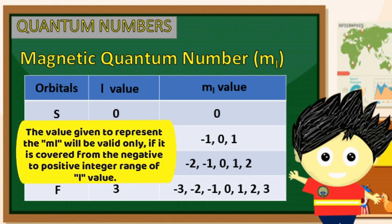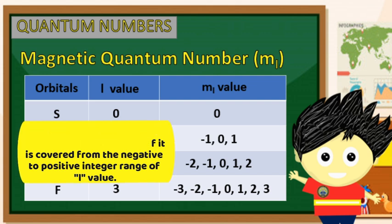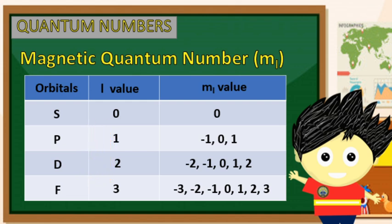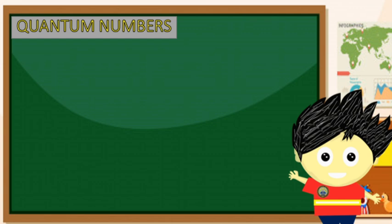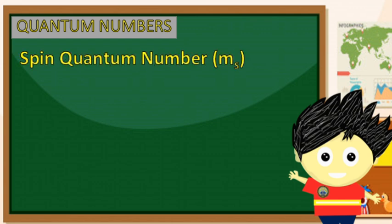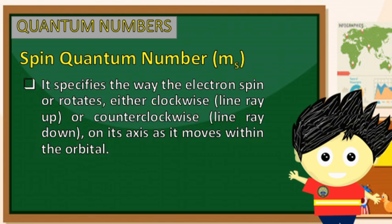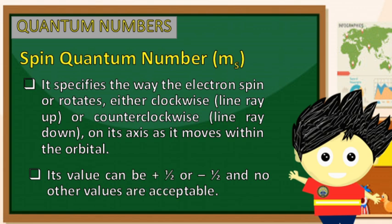Tandaan natin na sa pagsulat ng magnetic quantum number, hanggang pasok ito sa range na given sa ating table, maaaring pumili ka lamang ng isa na maaaring magrepresent sa ml value ng ating orbitals or highest energy level sa isang electron configuration. Ang huling quantum number naman ay tumutukoy sa tinatawag nating spin quantum number na nire-represent ng ms. It specifies the way the electron spins or rotates — either clockwise, na nire-represent ng line ray facing upwards, or counterclockwise, na nire-represent naman ng line ray facing downwards on its axis as it moves within the orbital. Ito ay maaaring magkaroon ng values na positive 1/2 or negative 1/2. Wala nang ibang values na pwede pa nating gamitin sa pag-represent sa spin quantum number.